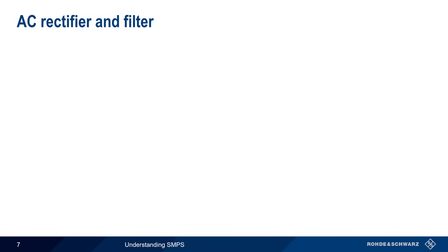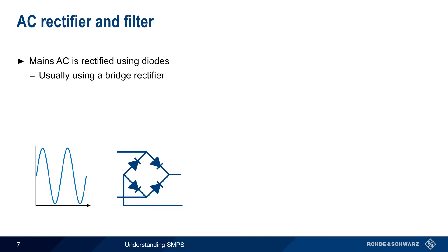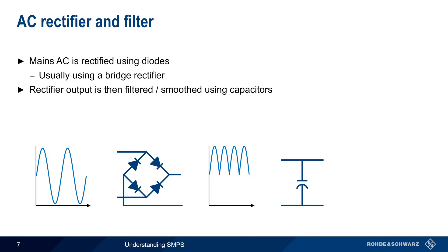Now let's look at each of these stages in a bit more detail. In an AC-DC switching mode power supply, the first step is rectifying the AC mains voltage using diodes. This is most often done using a bridge rectifier, as shown here. The pulsating output of the rectifier is then filtered or smoothed out using capacitors. The result is a very high voltage, constant DC output.